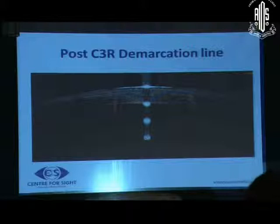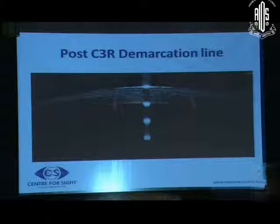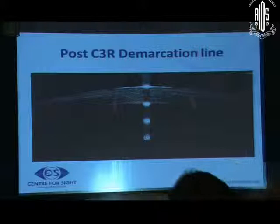These days we are doing CXL (corneal cross-linking) for keratoconus, and the OCT shows us the demarcation line, which is a direct clinical sign of cross-linking. It is usually seen after one month of the cross-linking procedure, and the depth of the demarcation line can be visualized and may in future be related to the effectiveness of treatment.